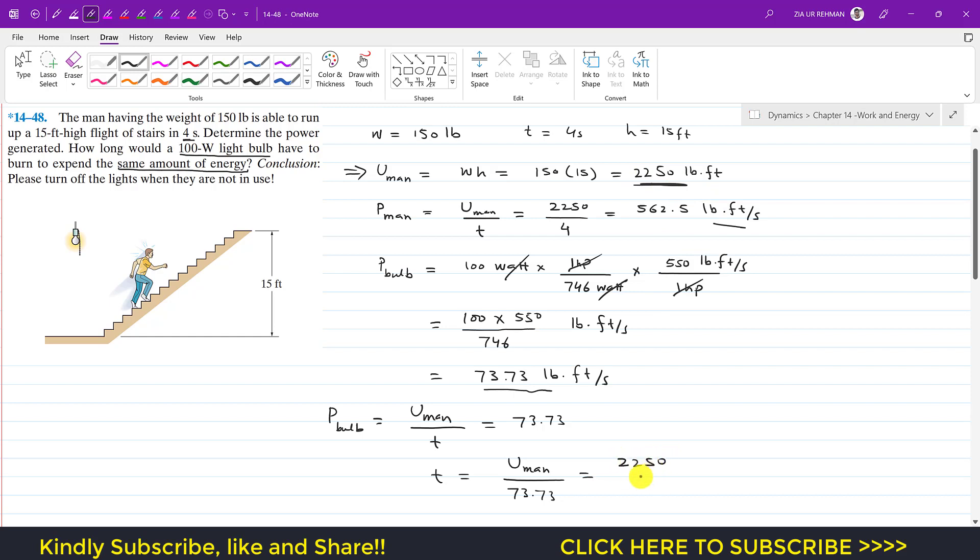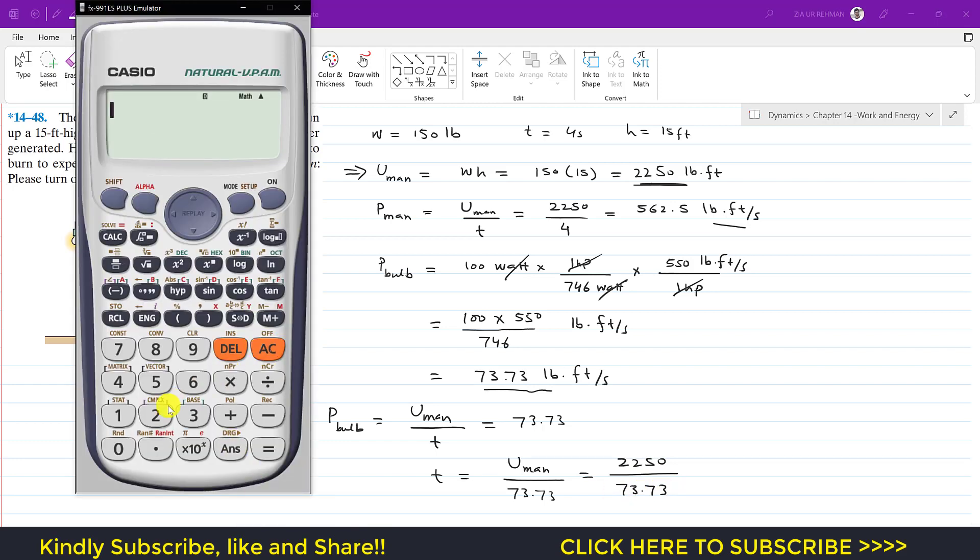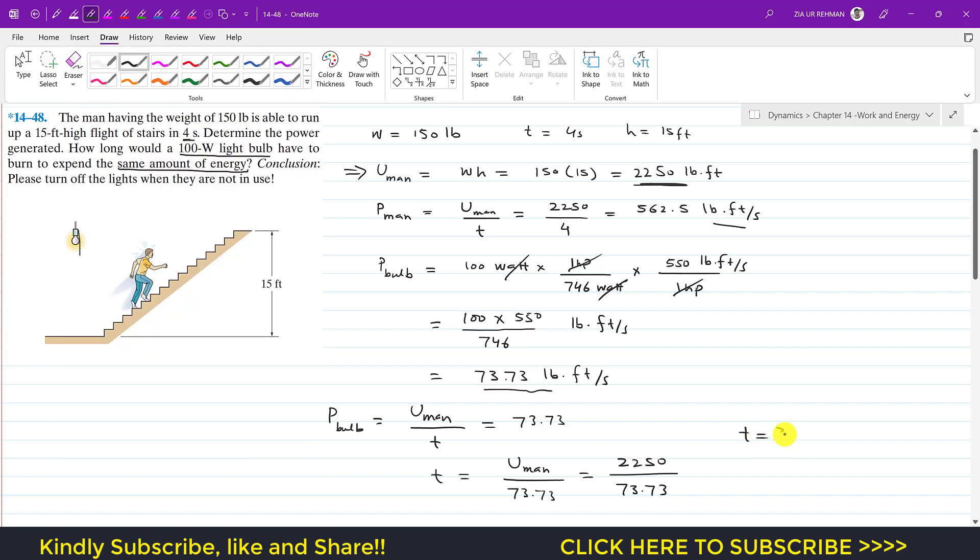And u of man is 2250, so this is 2250 divided by the power of bulb which is 73.73. So this is equal to approximately 30.52 seconds, so time equals 30.52 seconds.